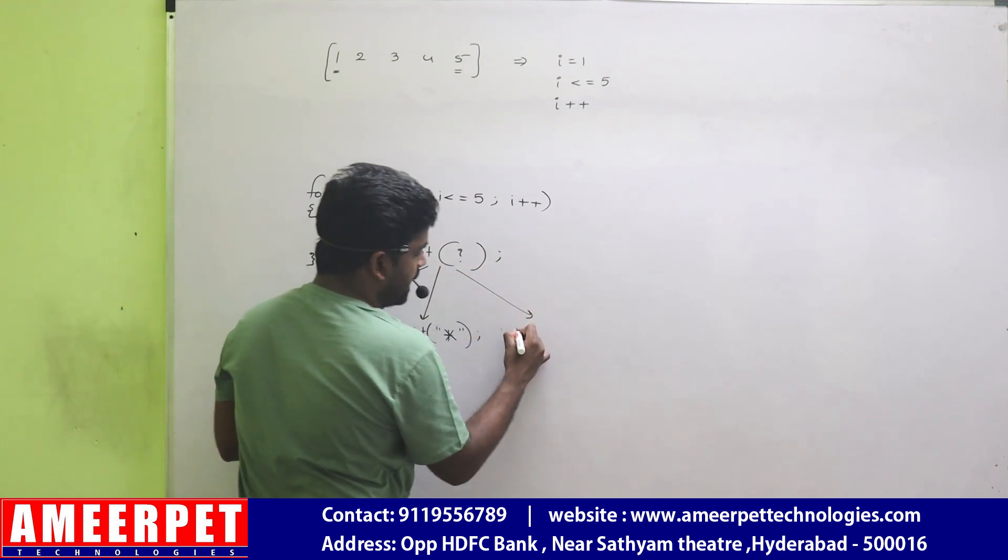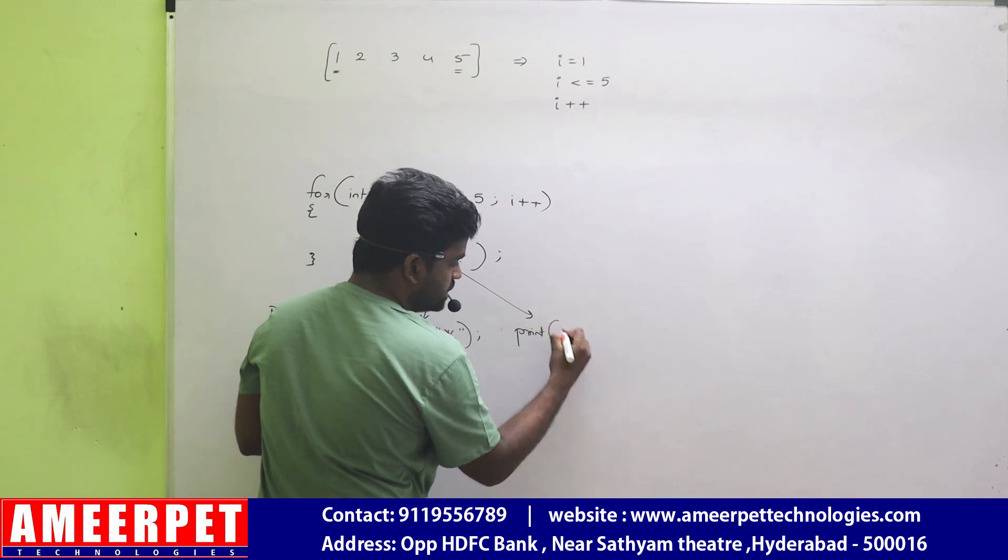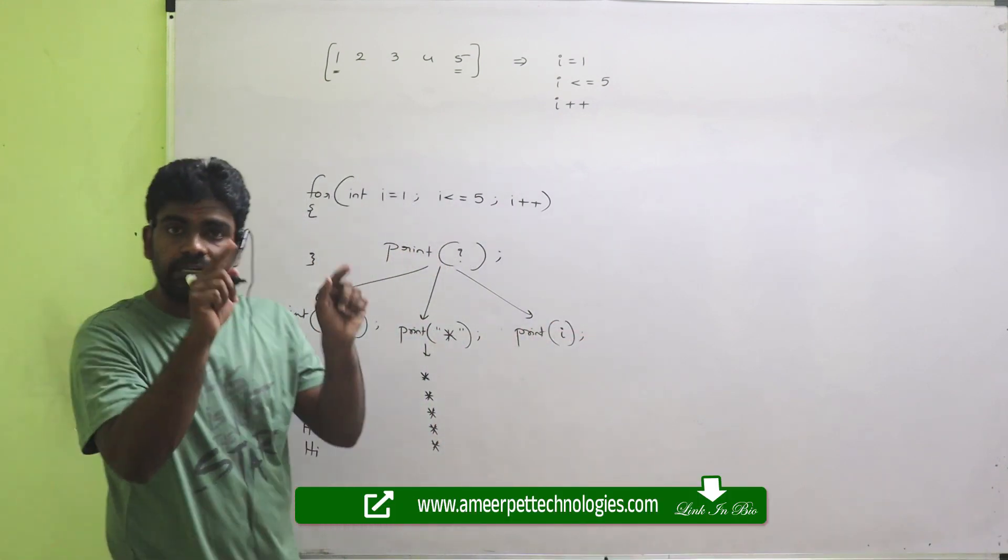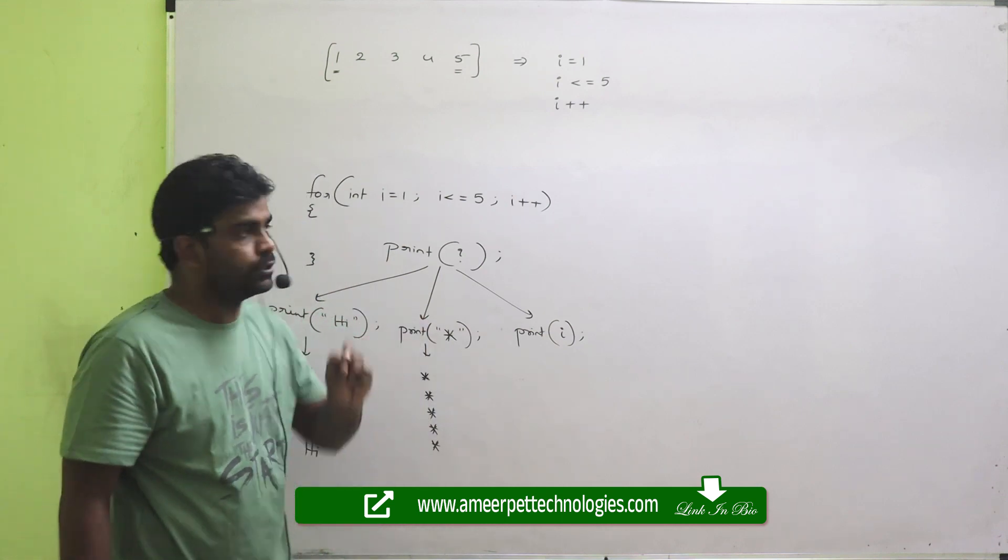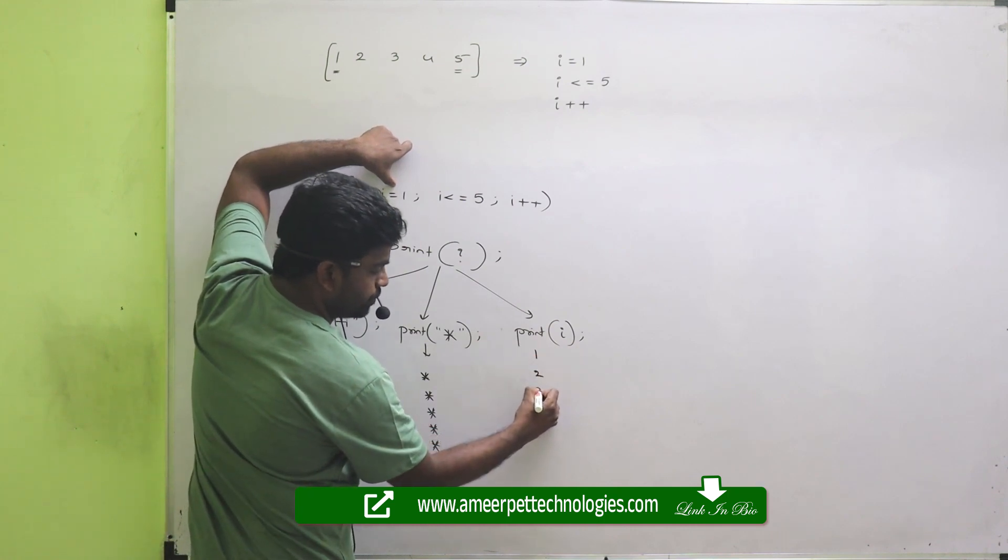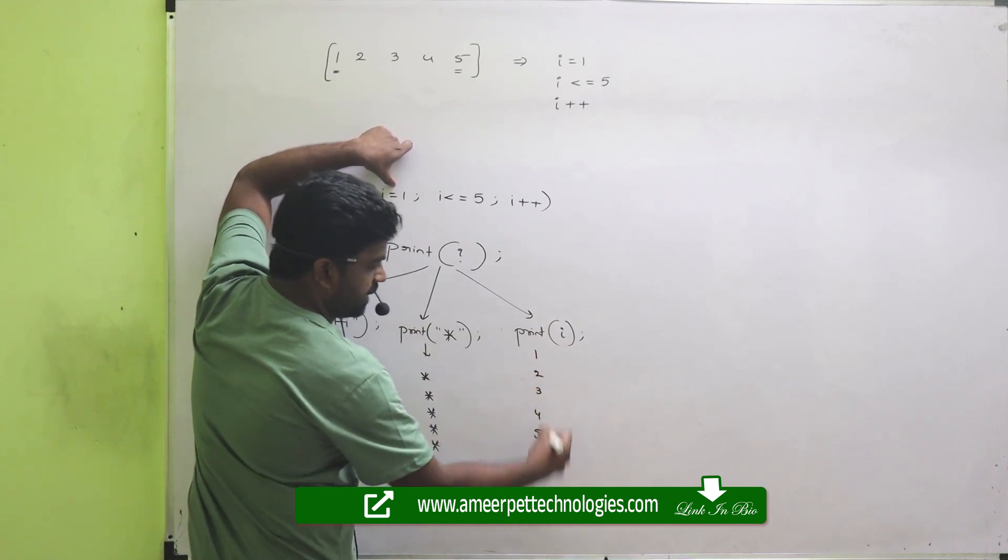Suppose if I am printing I. I means a variable, so directly print. Don't put it in double quotes. If you put it in double quotes or single quotes, I will print, no value. But what is I value first? 1, 2, 3, 4, 5, like this.